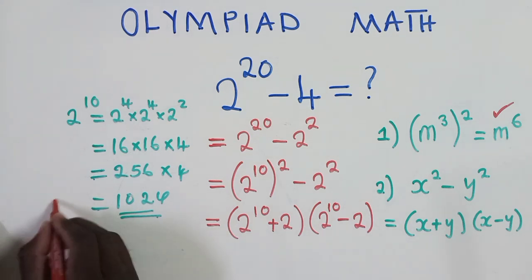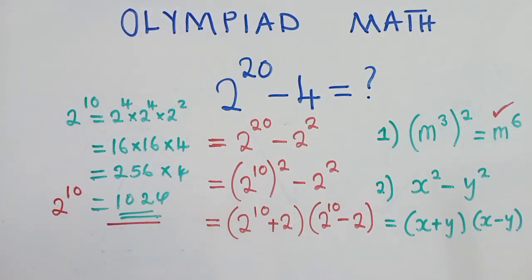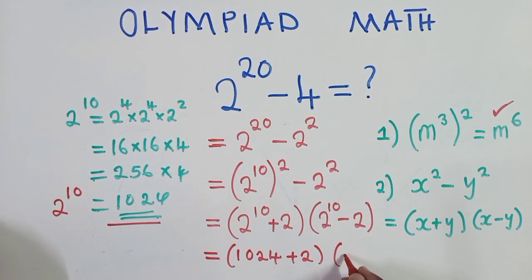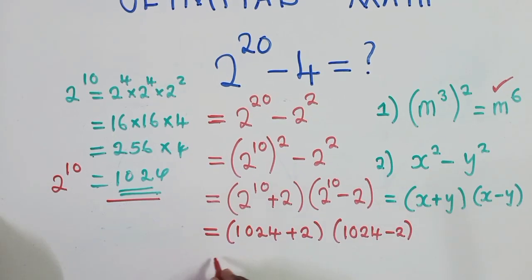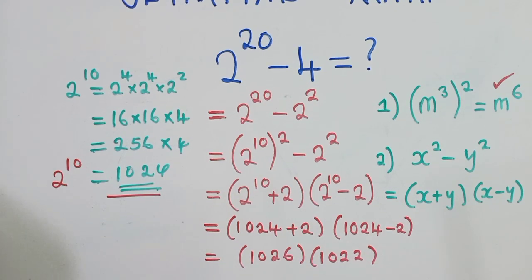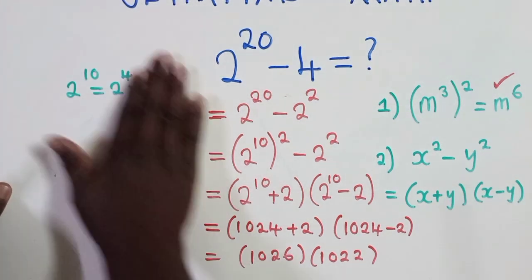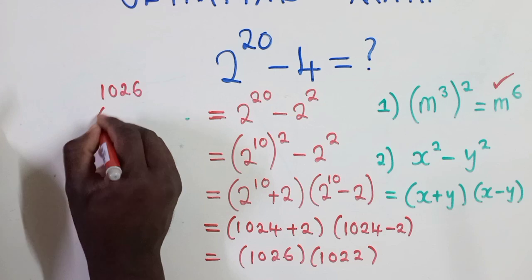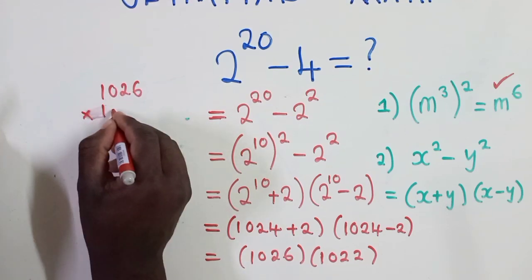So we now know that 2 power 10 is the same as 1024. So now we're going to write it here: 1024 plus 2 there inside the brackets, again here 1024 minus 2. So now from this stage we can work out things inside the brackets. So now from this stage we can multiply these two. It will be 1026 times 1022.